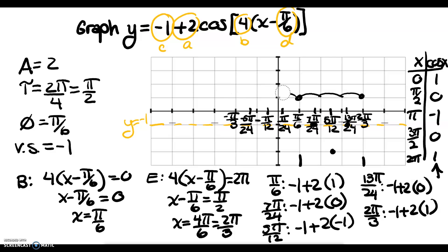Let's get rid of my loop-de-loops and draw in one period of my graph. I plot the points: up at 1, then at negative 1, down at negative 3, back to negative 1, and up at 1. Then I copy it to my second period. There's the graph over 2 periods.